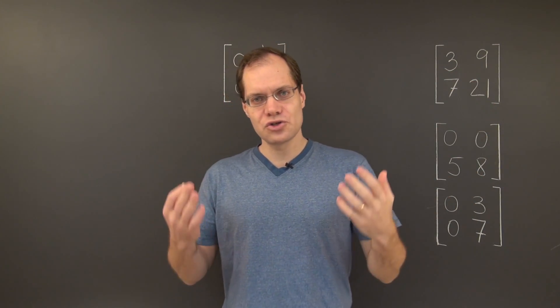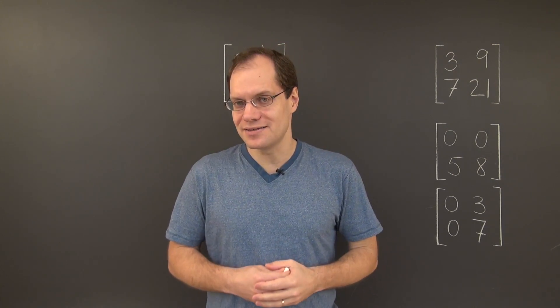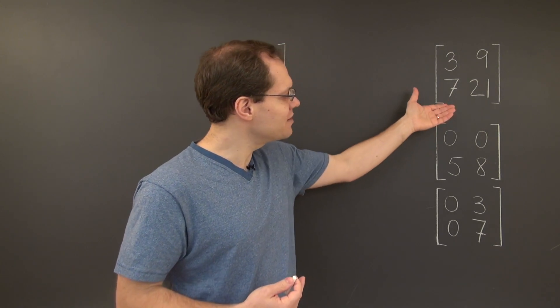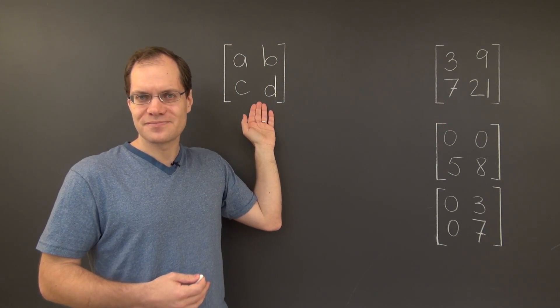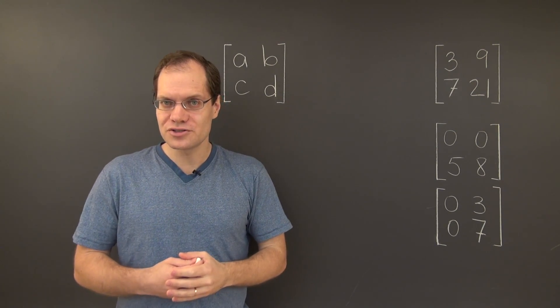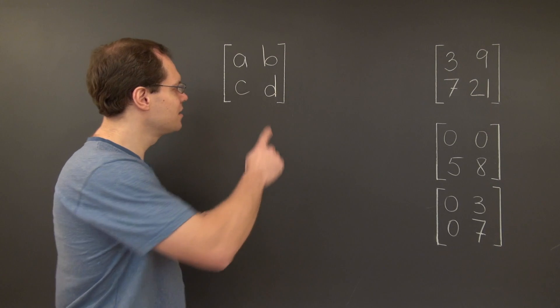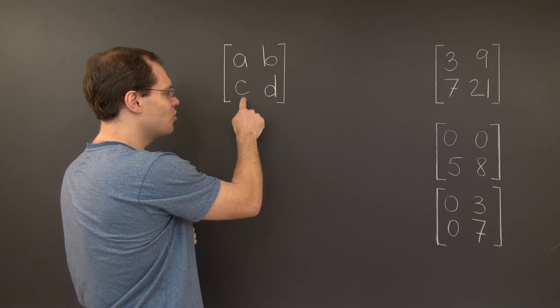And the second approach also rightfully concludes that the columns are linearly dependent. So all we need to do now is carry over these approaches to this generic matrix. According to the first approach, we'll say that the columns of this matrix are linearly dependent if B over A equals D over C.